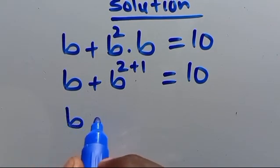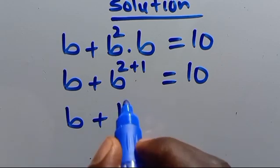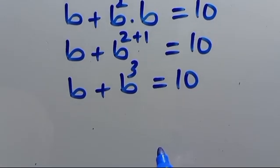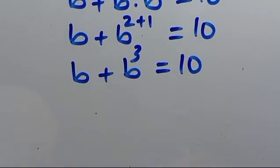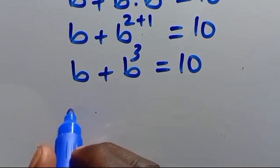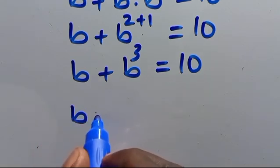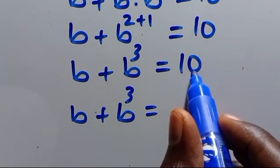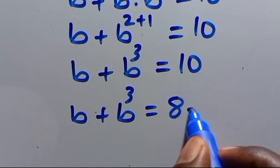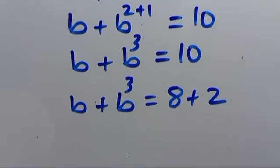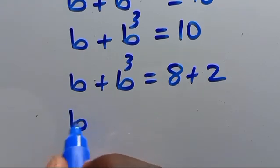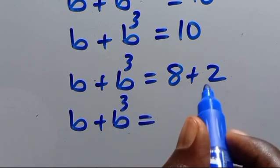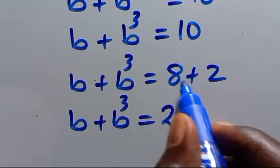From here we have B plus B to the power of 3 equals 10. Then from here we can do something reasonable — we can have B plus B to the power of 3, and we can write 10 as 8 plus 2. Then B plus B to the power of 3, let's have these two here first — we can have 8 in base 2 as 2 to the power of 3.